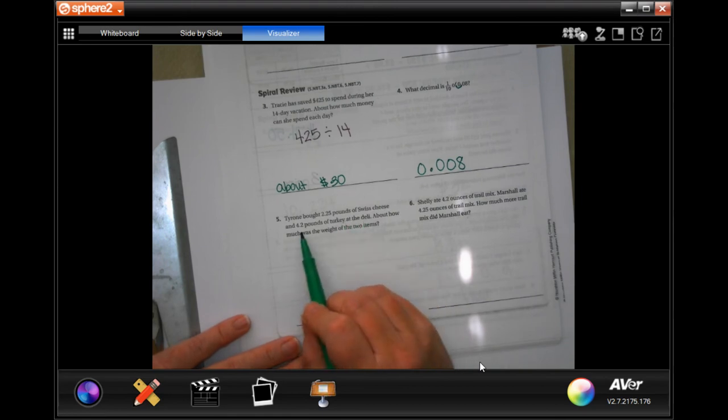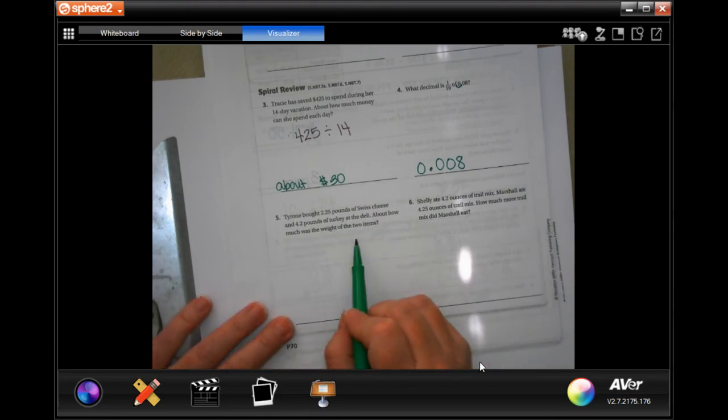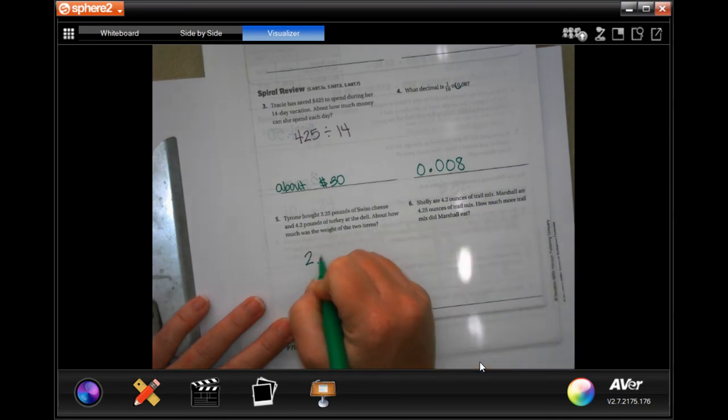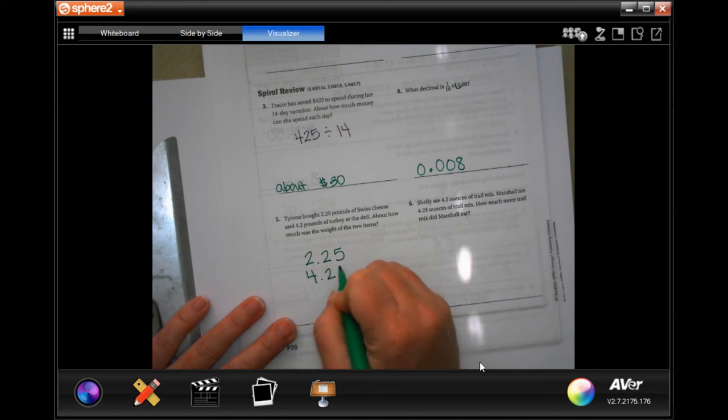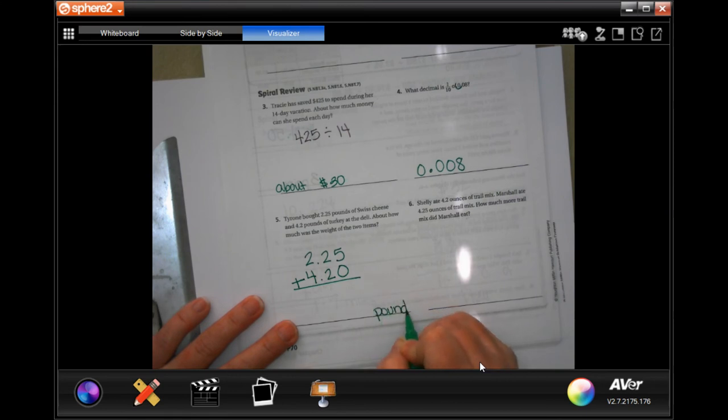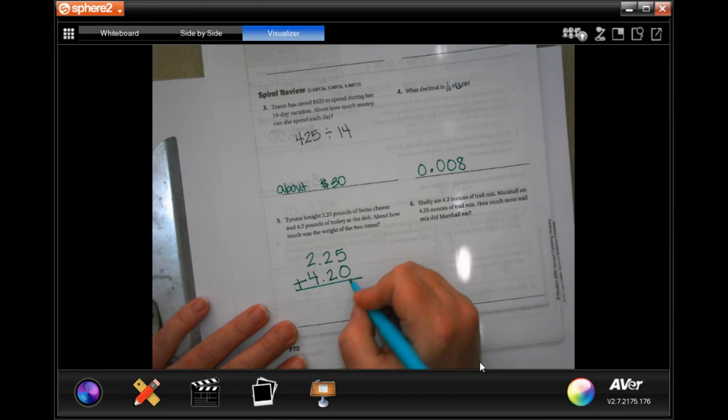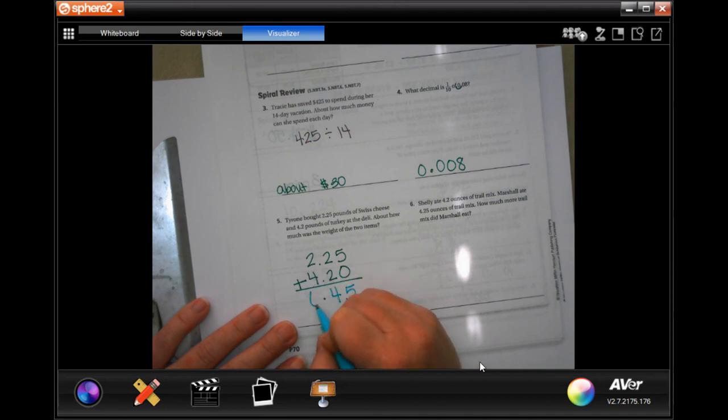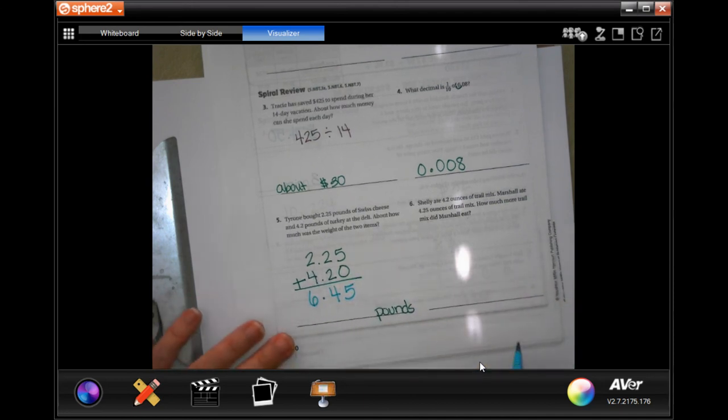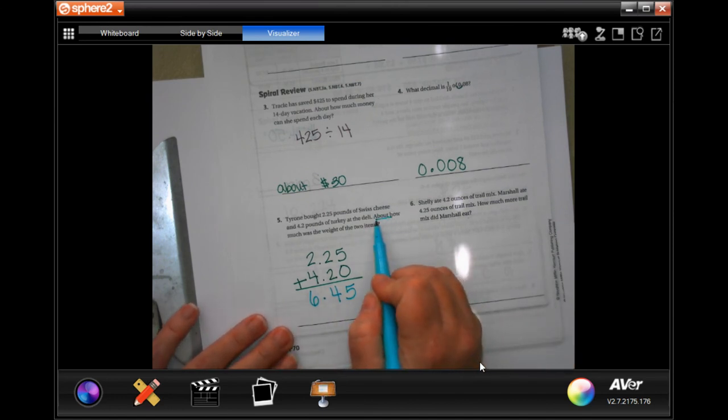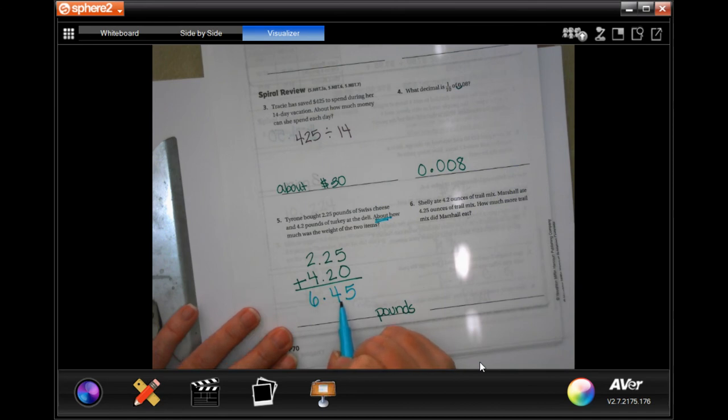I'm around about 2.25 pounds of Swiss cheese and 4.2 pounds of turkey at the deli. About how much weight of the two items. So, 2.25, 4.2. I'm going to put a 0 there. Add them up. That's going to give you how many pounds. So, drop to the decimal. 5 plus 0 is 5. 2 plus 2 is 4. And 2 plus 4 is 6. 6.45 pounds. Which is, if we rounded it, because it says about how much. So, if we rounded it, we wouldn't round it up because the 4 is less than 5. So, it's going to be about 6 pounds.